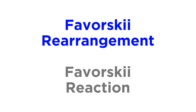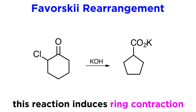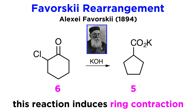Next up in our survey of name reactions is the Favorski rearrangement, not to be confused with the Favorski reaction, which is actually something completely different. As applied to ring systems, it is a classical reaction inducing ring contraction, meaning that a ring is getting smaller. The reaction was invented by Russian chemist Alexei Favorski in 1894.